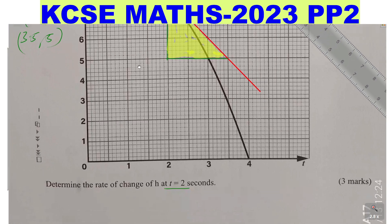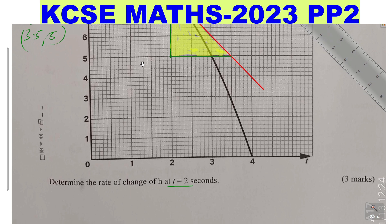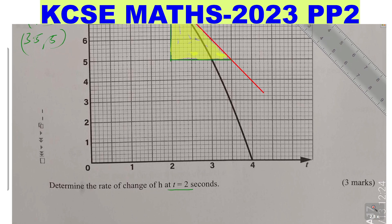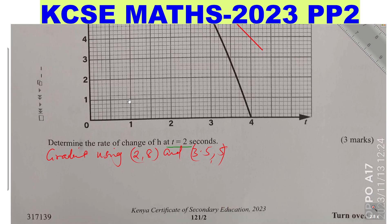So the rate of change, therefore, is given by the gradient. The gradient using (2, 8) and (3.5, 5). So now to get the gradient, change in Y divided by the change in X. So change in Y would be 5.5 subtract 8 divided by change in X, 3.5 subtract 2.